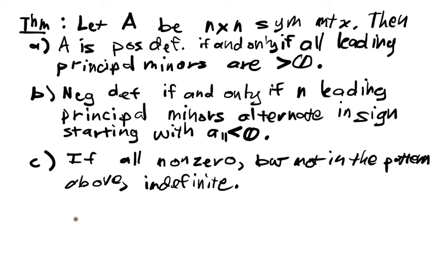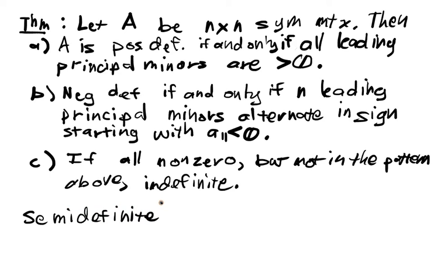Now we have another consideration. If the leading principal minors include a 0 but all others fit the sign pattern, then we have to check all of the principal minors. We have positive definiteness, negative definiteness, and indefiniteness characterized — but what about semidefiniteness? For semidefiniteness, we have to check all principal minors, which is not ideal.